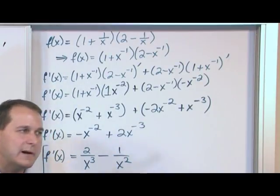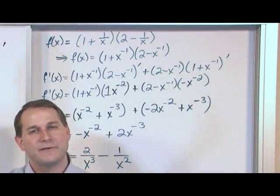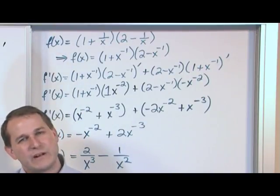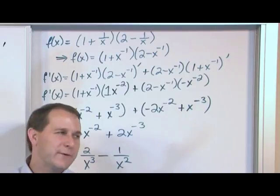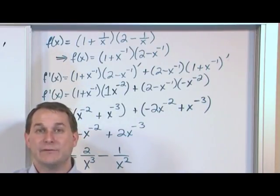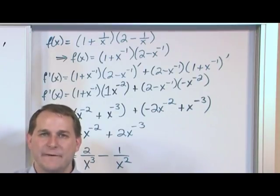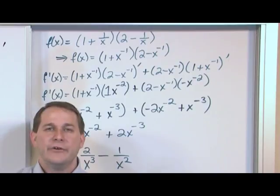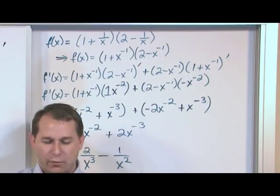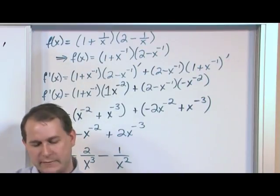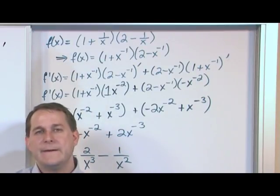It's totally the same method — first times the derivative of the second, plus the second times the derivative of the first. But because of the negative exponents running around, you end up with fractions in the final answer, like that fractional example I gave earlier. It's all the same stuff, but with a more complicated expression it's very easy to make a sign error. So take it one step at a time. Now we're going to work a few more problems that ratchet up the complexity just a tiny bit to show you how to handle those.